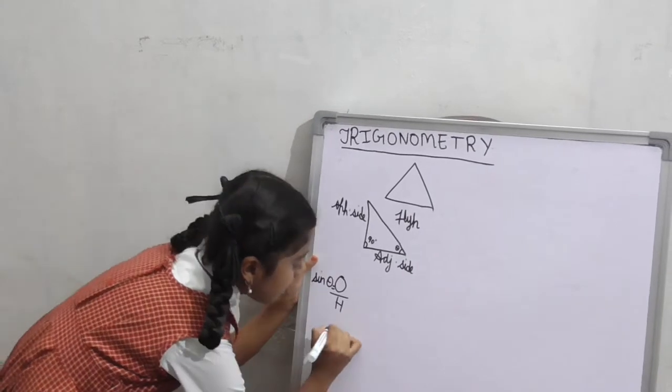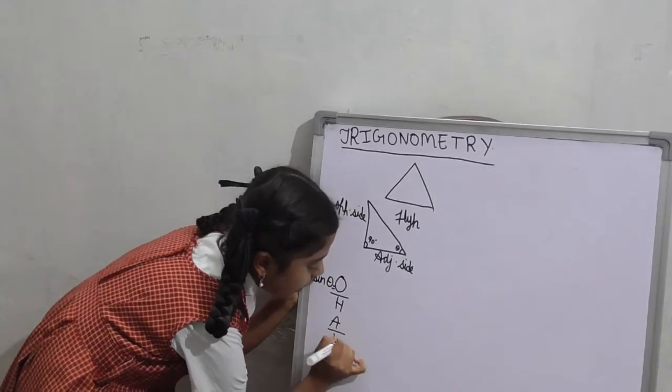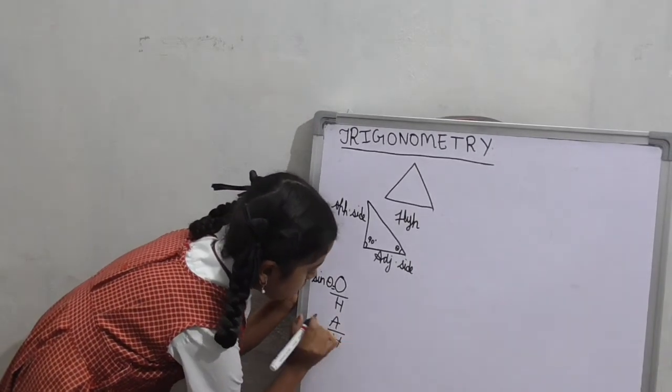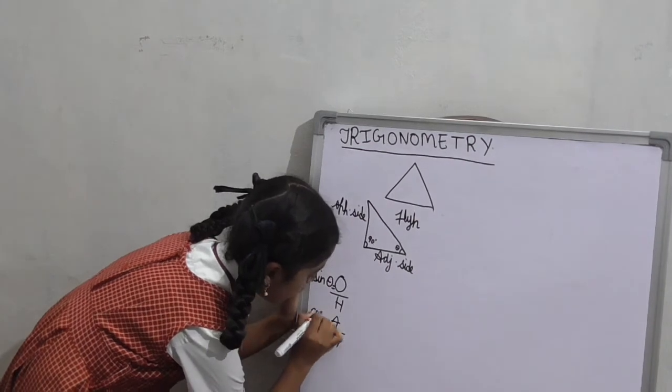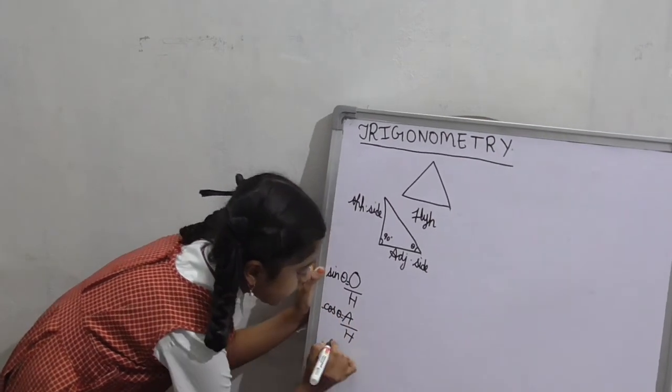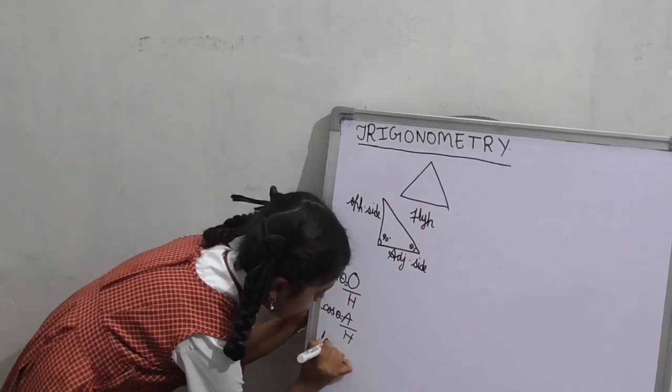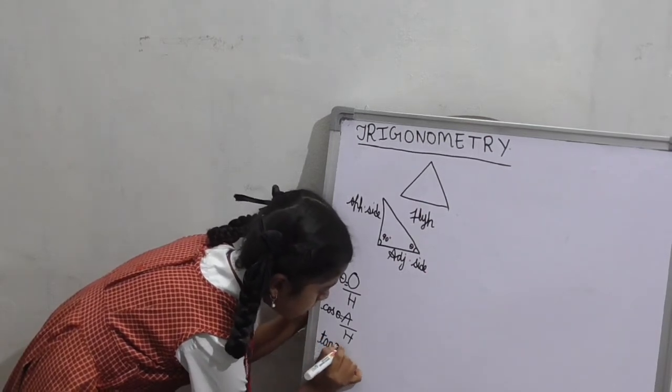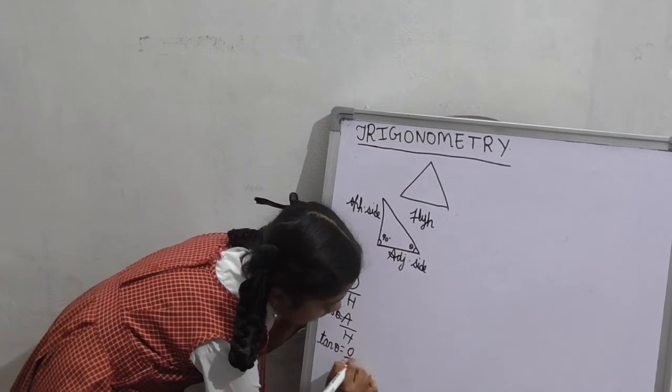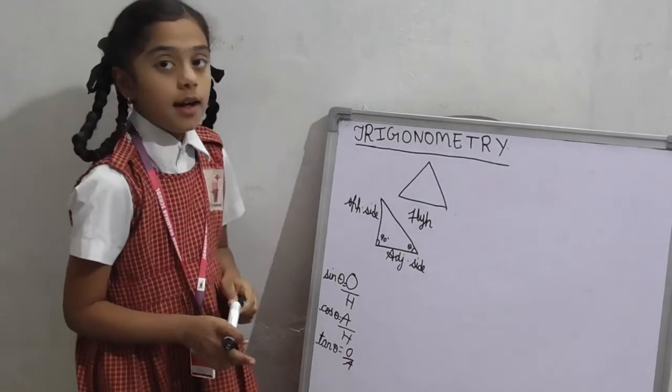Similarly, adjacent by hypotenuse is called as cos theta. Tan theta is equal to opposite by adjacent side.